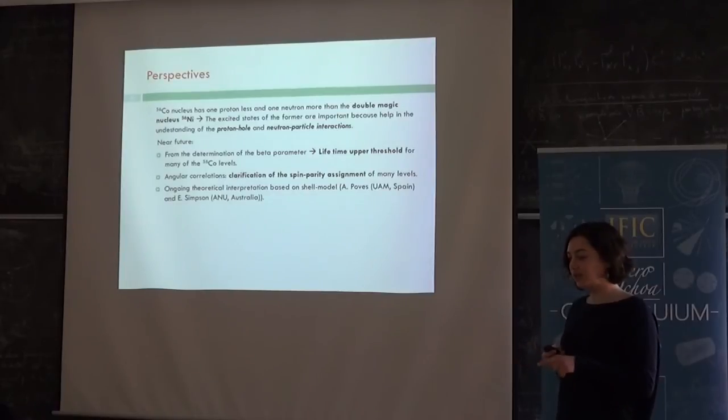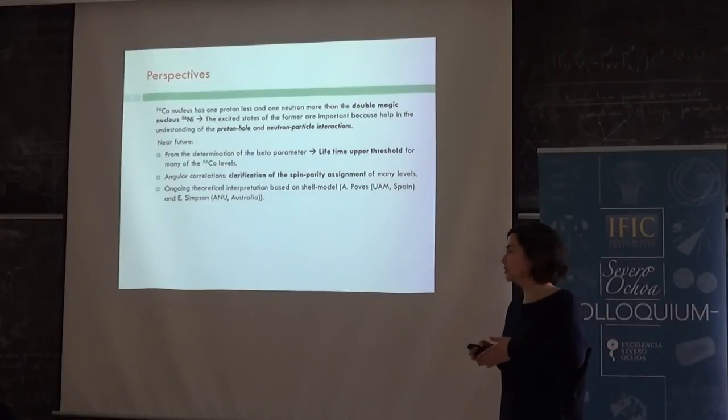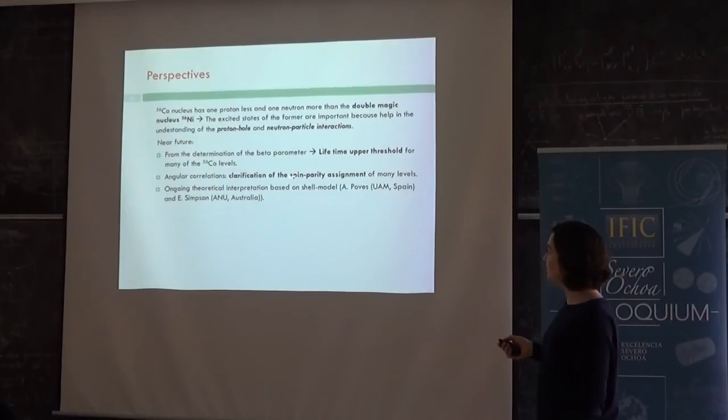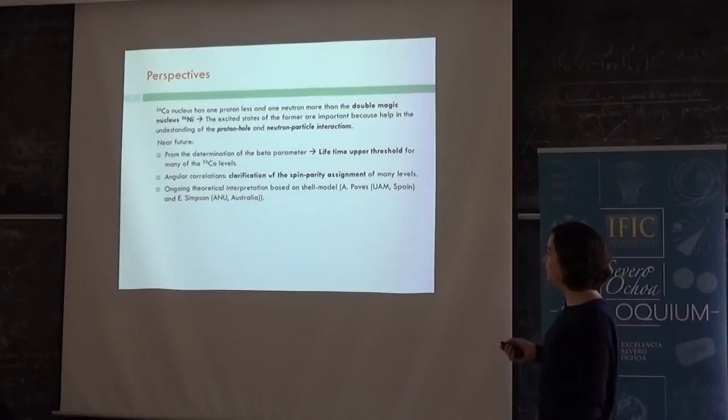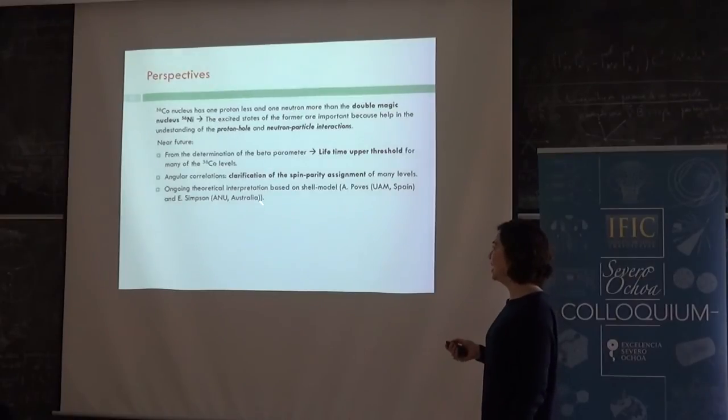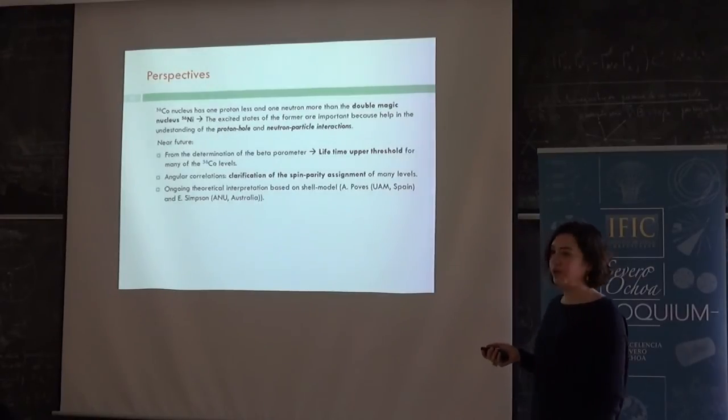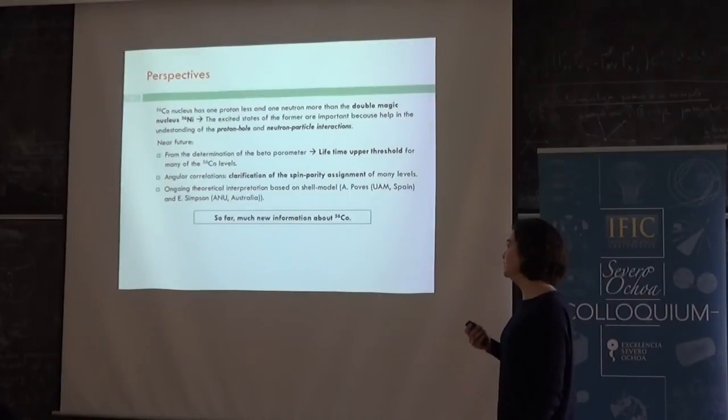For the future, also you know that you have the Doppler effect when you have the reaction because some gammas can emit while they are flying. So also from the FWHM parameter, you can have lifetime upper thresholds for many of the levels. And then we will have clarification of the spin parity for many of the levels after doing the angular correlations. And then there are some also ongoing theoretical interpretations based on shell model that Alfredo Poves is doing in Madrid, in the Universidad Autónoma de Madrid, and Edward Simpson from Australia. So so far, there is much new information about the 56-cobalt.